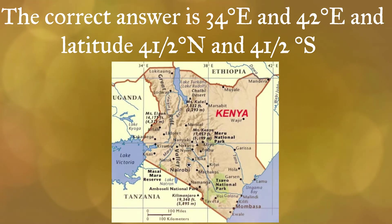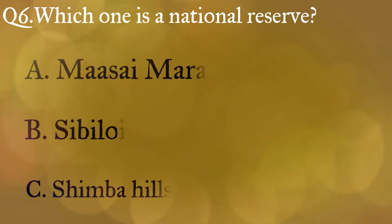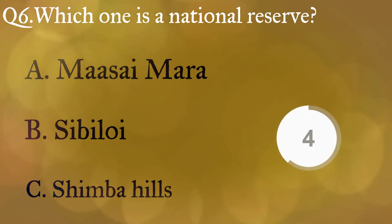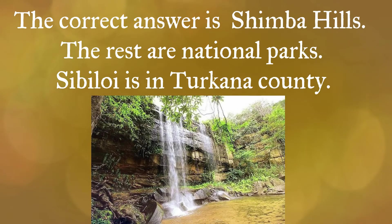Question 6: Which one is a national reserve in Kenya? A: Maasai Mara, B: Sibiloi, C: Shimba Hills. The correct answer is Shimba Hills — the rest are national parks. Sibiloi is in Turkana county.